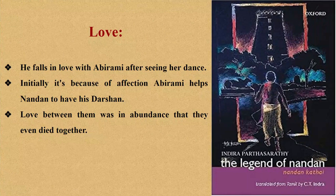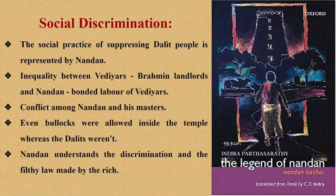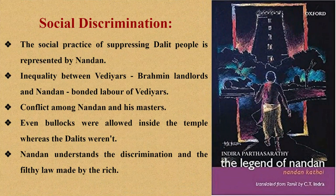Social discrimination is one of the significant themes in this play, represented by Nandana. There is inequality between the Vediyas, who are Brahmin landlords, and Nandana, a bonded laborer of the Vediyas. Dalits have been victims of class-related economic exploitation by upper caste landlords. Even bullocks were allowed inside the temples whereas Dalits weren't. They tell Nandana to worship the folk deities of the Paraya instead of Shiva, the god of Brahmanical Hinduism. The suppression of Dalit people continued. Nandana understands the discrimination and the filthy law made by the rich, and he teaches his fellow Dalits who lack understanding and awareness of what is happening around them.